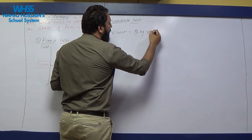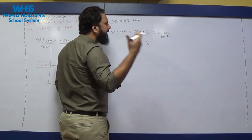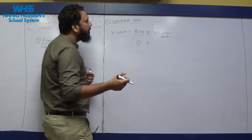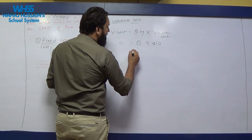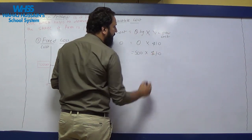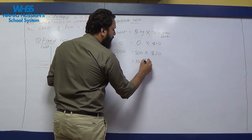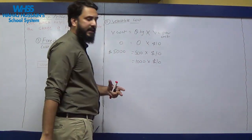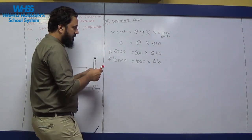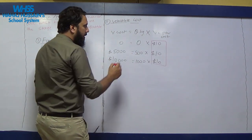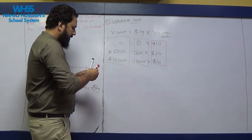Variable cost equals quantity multiplied by variable cost per unit. If we produce nothing and the cost per unit is $10, total variable cost is zero. If we produce 500 units at $10 each, total variable cost is $5,000. If we produce 1,000 units at $10 each, total variable cost is $10,000. The per-unit cost does not change, but the change in quantity changes the overall variable cost.